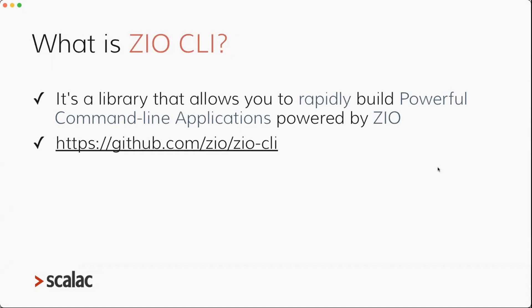So what is ZIO CLI? ZIO CLI is a library that allows you to rapidly build powerful command line applications powered by ZIO. The keyword here is 'rapidly' — you can still have all of those nice production-grade features, but you should be able to implement them very quickly. Here's a link to the GitHub repo, so if you are interested in looking at the source code or contributing, all contributions are welcome.